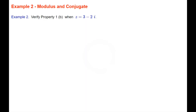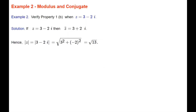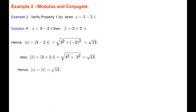Example 2 verifies property 1b when z equals 3 minus 2i. The conjugate of z is 3 plus 2i. The modulus of z is the square root of 3 squared plus minus 2 squared, which is the square root of 13. The modulus of the conjugate of z is the square root of 3 squared plus 2 squared, which is also the square root of 13. So the property is verified: the modulus of z equals the modulus of the conjugate of z, both equal to the square root of 13.